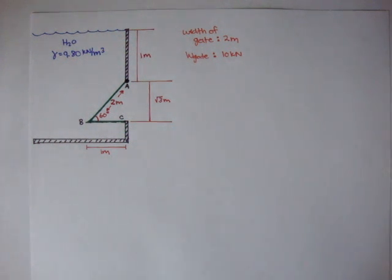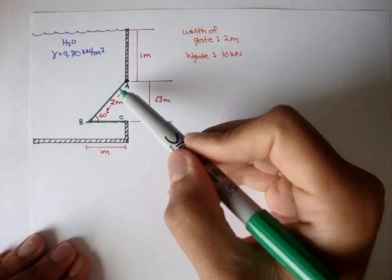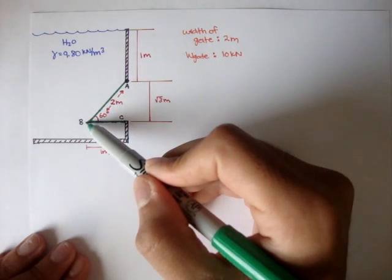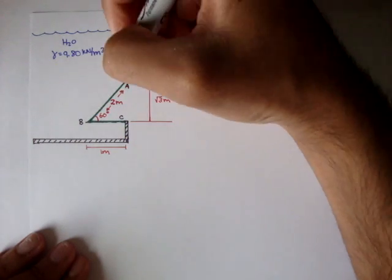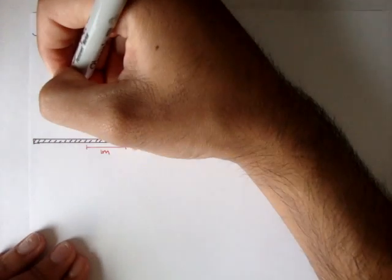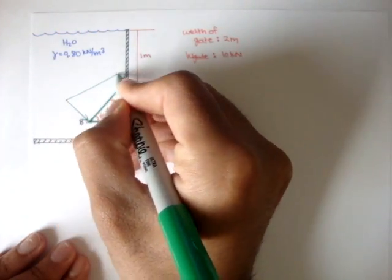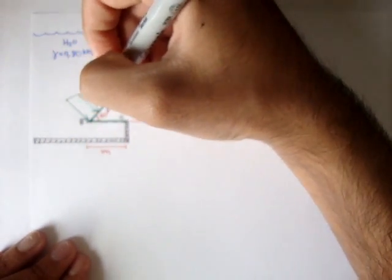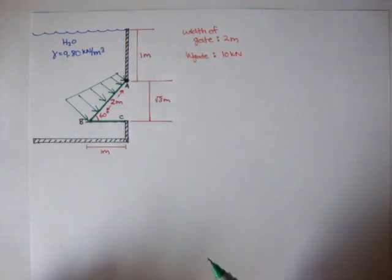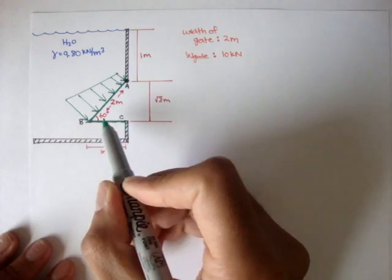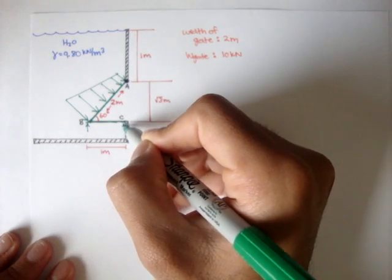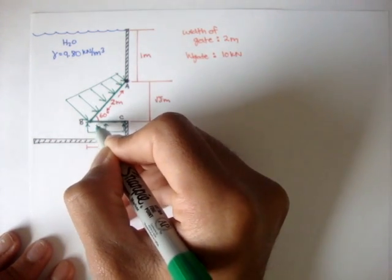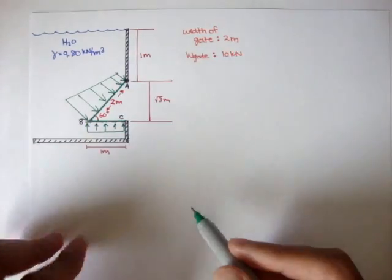The very first thing we want to note is the pressure distributions of the water on the gate. Down here, we have a pressure at A, we have a pressure at B, and we have a pressure everywhere in between. So the pressure distribution from A to B looks something like this. Pressure increases as you go further down in depth. Down here at B and C, every point along this line is at the same elevation, so the pressure distribution here is just linear and straight. It doesn't have this slope that we have up here at AB.